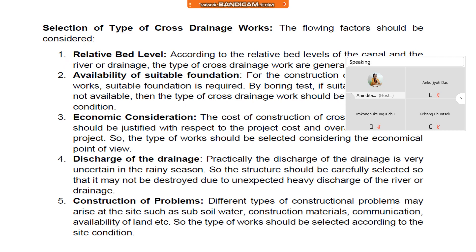Next, selection of types of cross drainage works. The following factors should be considered. The first one is relative bed level. According to the relative bed levels of the canal and the river or drainage, the type of cross drainage works are generally selected.